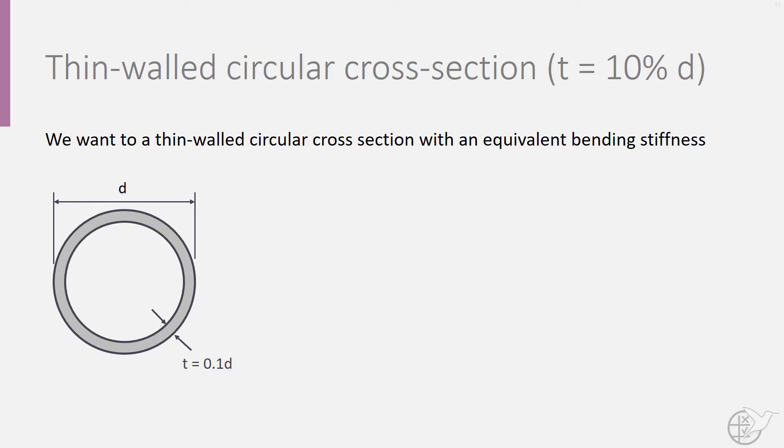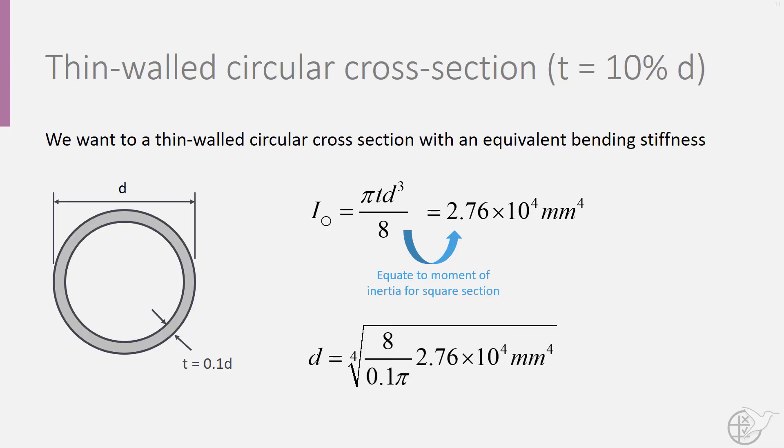Here we can use the following equation for the moment of inertia of a thin walled circular tube. Equating it to that of the square cross-section, we can calculate that a 29 mm diameter tube with a wall thickness of 2.9 mm will have the same bending stiffness.